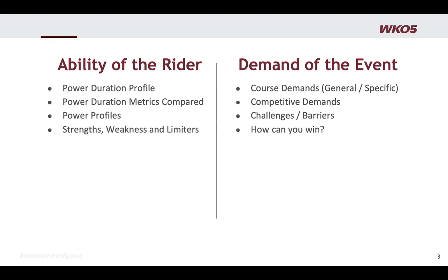I'm going to teach that over the next couple of lessons. This lesson is all about understanding the rider. We're going to look at the ability of the rider, including their power duration profile, their power duration metrics compared, their power profiles, and some strengths, weaknesses, and limiters. I'm going to demo some of the charts that are in WKO, and I'm going to suggest maybe you look a little deeper and find some of your own.